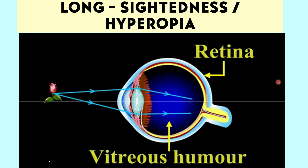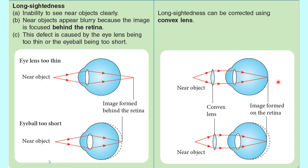The second type of visual defect is long-sightedness, also known as hyperopia or hypometropia. A person with long-sightedness sees distant objects clearly, but unfortunately, nearer objects are blurry. This might be because the eye lens is too thin. When the eye lens is too thin, the light from the nearer object is focused behind the retina. Another reason is that the eyeballs might be too short, so instead of the light being focused exactly on the retina, the light is focused behind the retina.